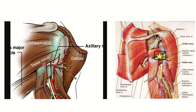In the back of the axilla there is a quadrangular space and a triangular space. In the second picture we can see the quadrangular space in the upper part and the triangular space below it. We need to identify which space the radial nerve travels through.